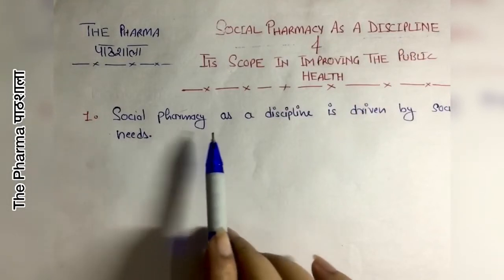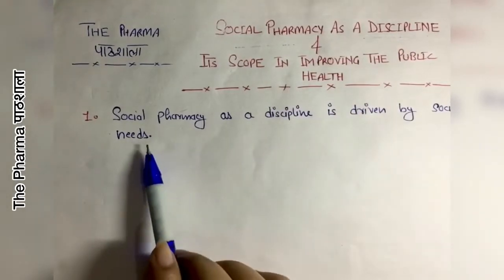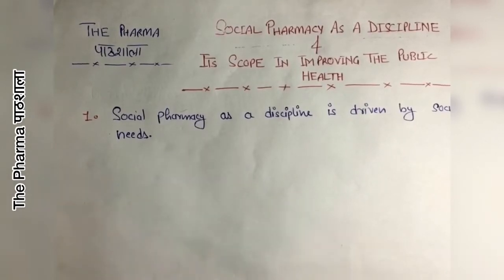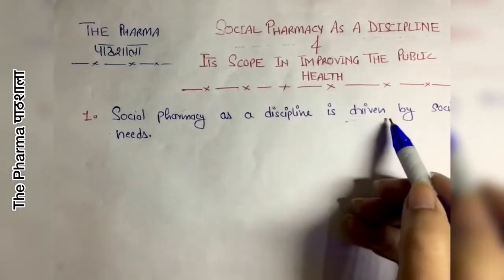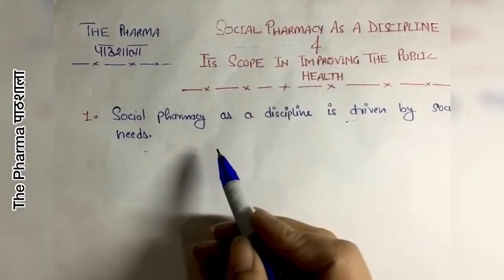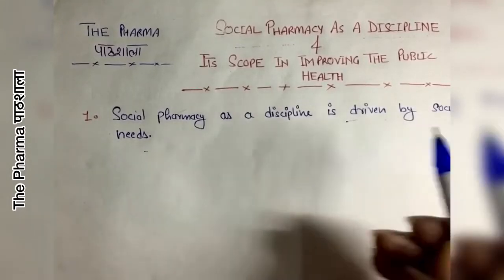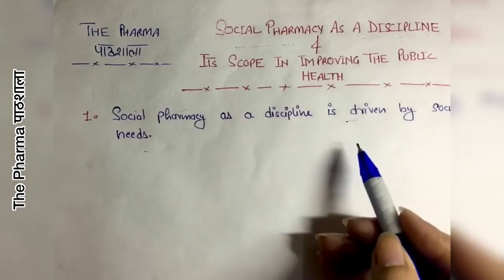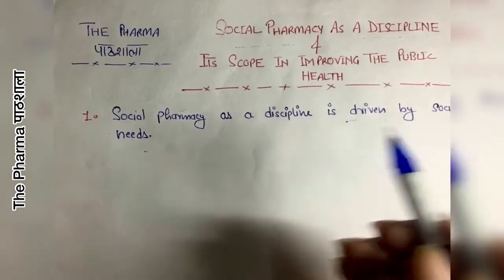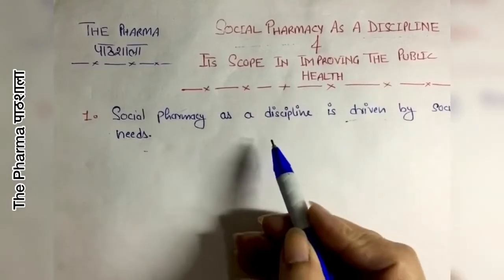The first point is this: Social pharmacy as a discipline is driven by social needs. If we take social pharmacy as a discipline, then it will be based on the social needs of society — the needs and expectations related to medicine, pharmacy, and pharmacists.